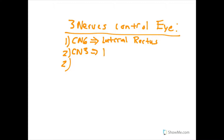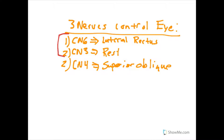CN3 controls all the rest of the muscles, and CN4 — which controls the superior oblique — is not going to play a role for us here. So really it's just CN6 and CN3 that we're going to be worried about. A convenient mnemonic to remember this is like a fake chemistry formula: LR6SO4O3 — lateral rectus is cranial nerve 6, superior oblique is number 4, and the others are 3, the oculomotor nerve.